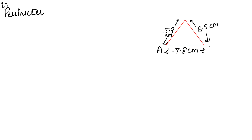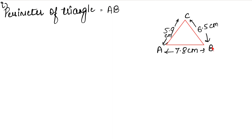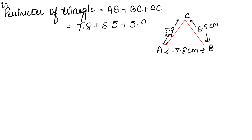I will name the sides so you can understand. Perimeter of triangle ABC means we will add all sides: AB plus BC plus AC. AB is 7.8 cm, BC is 6.5 cm, and AC is 5.9 cm.